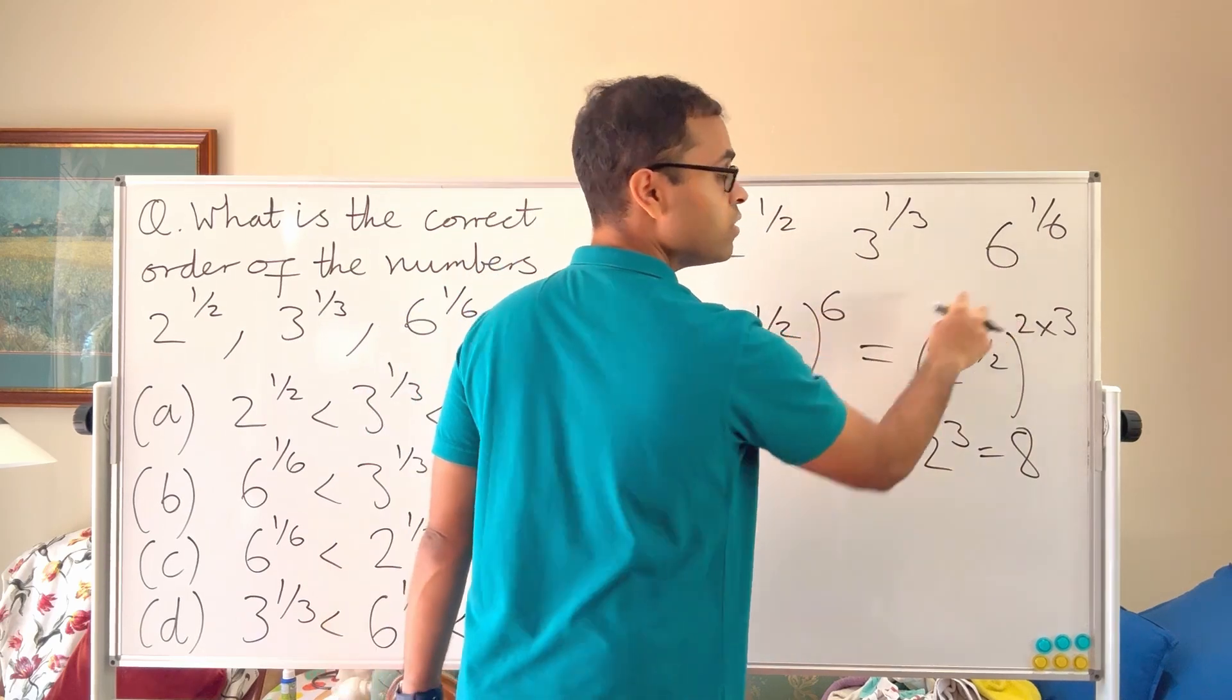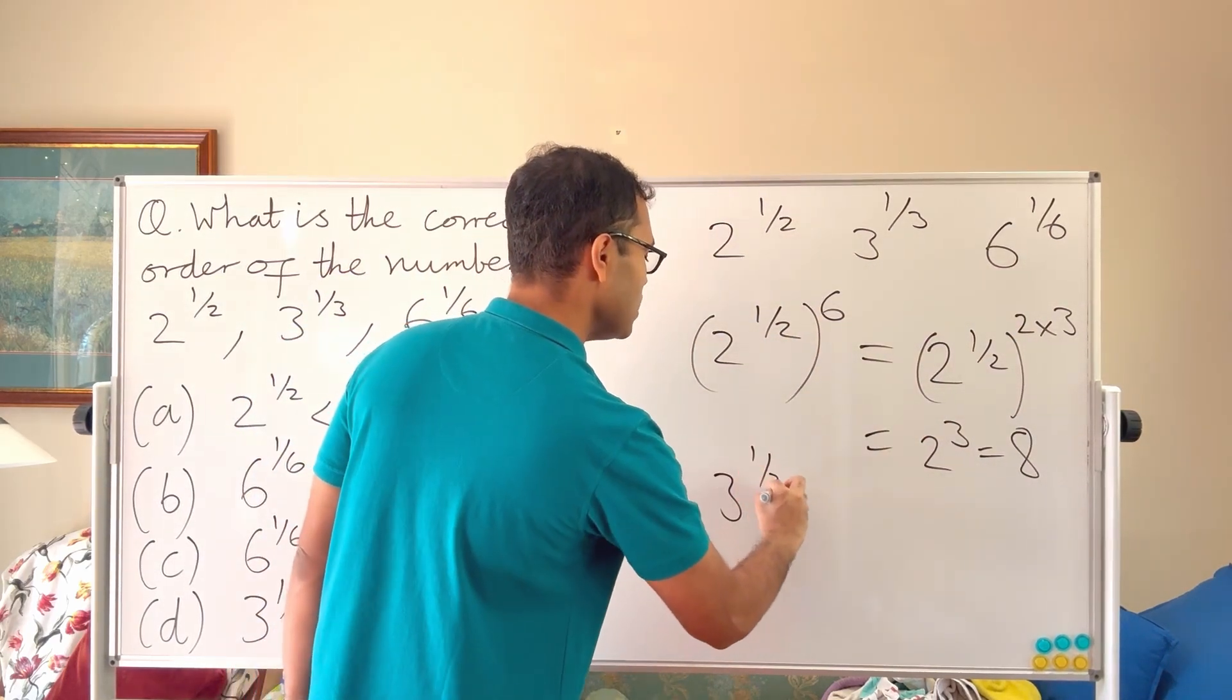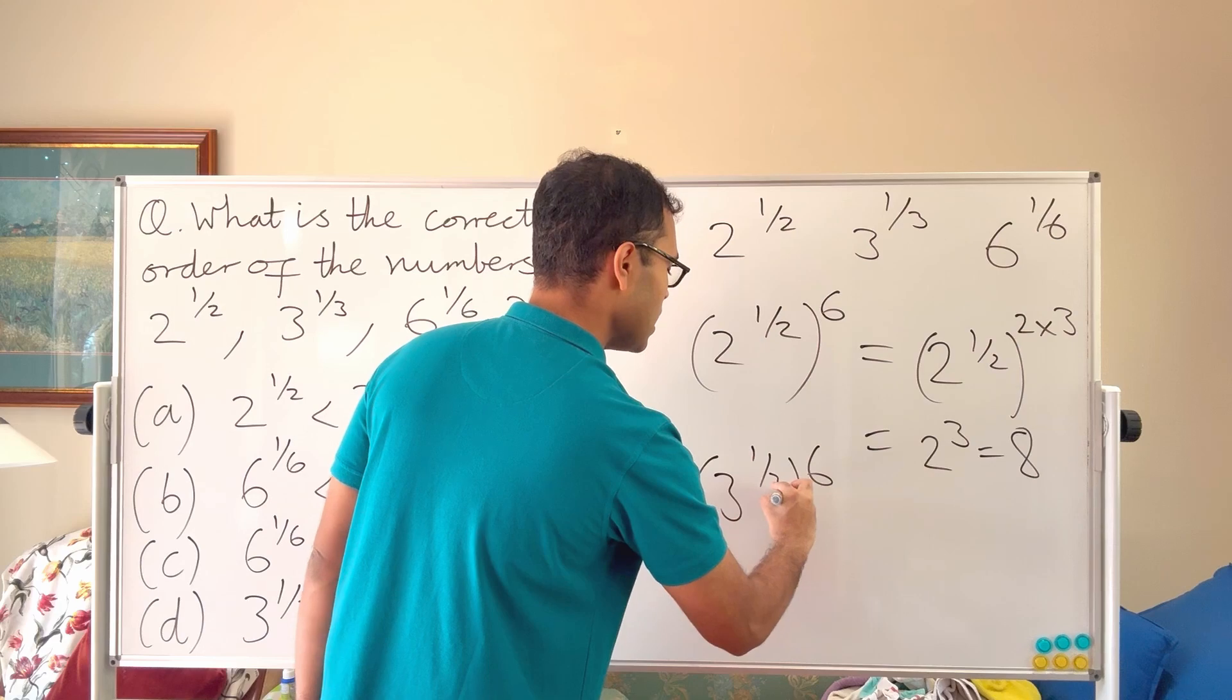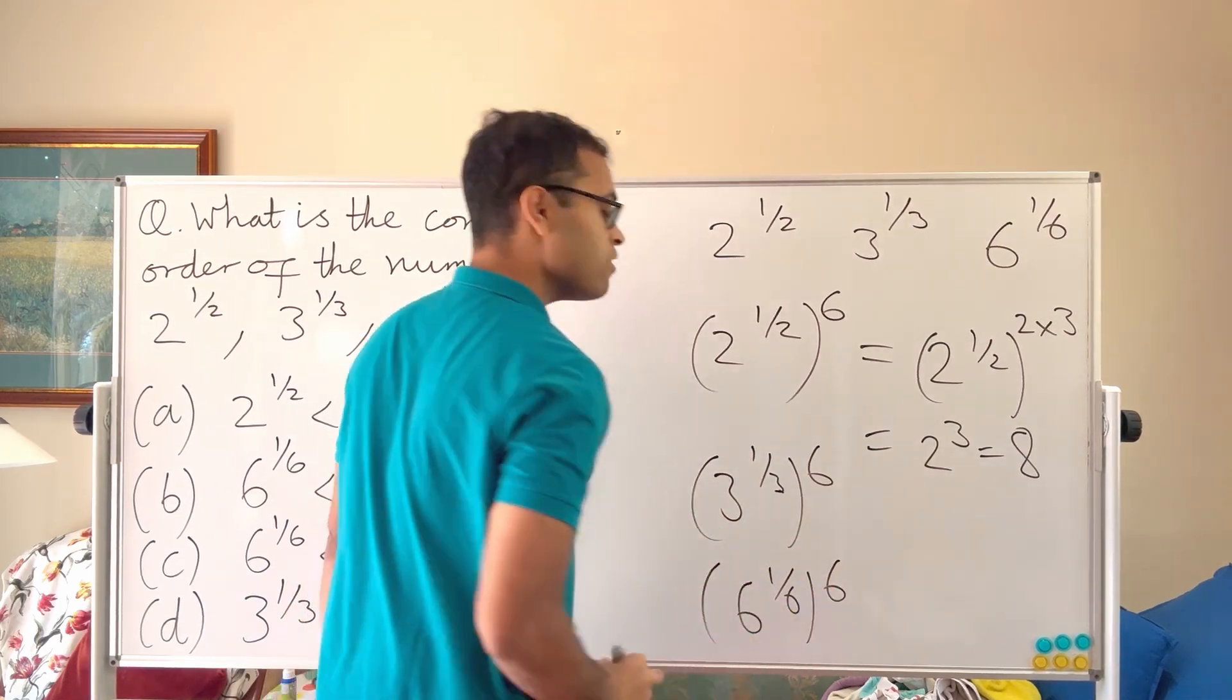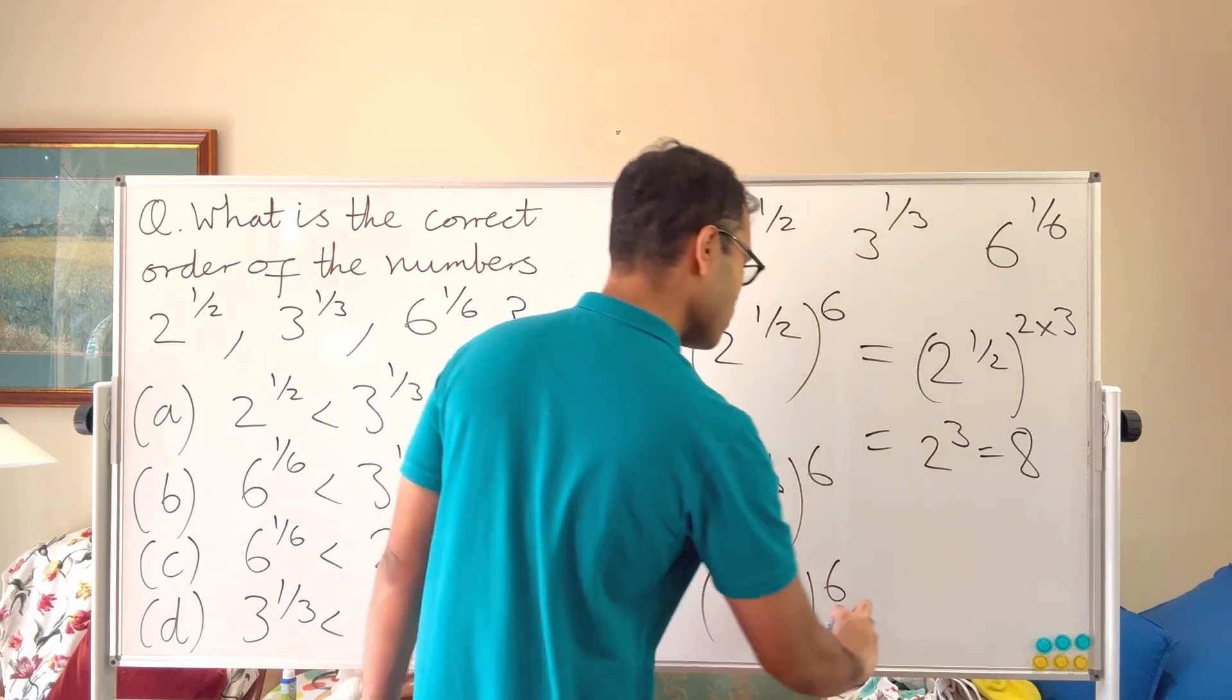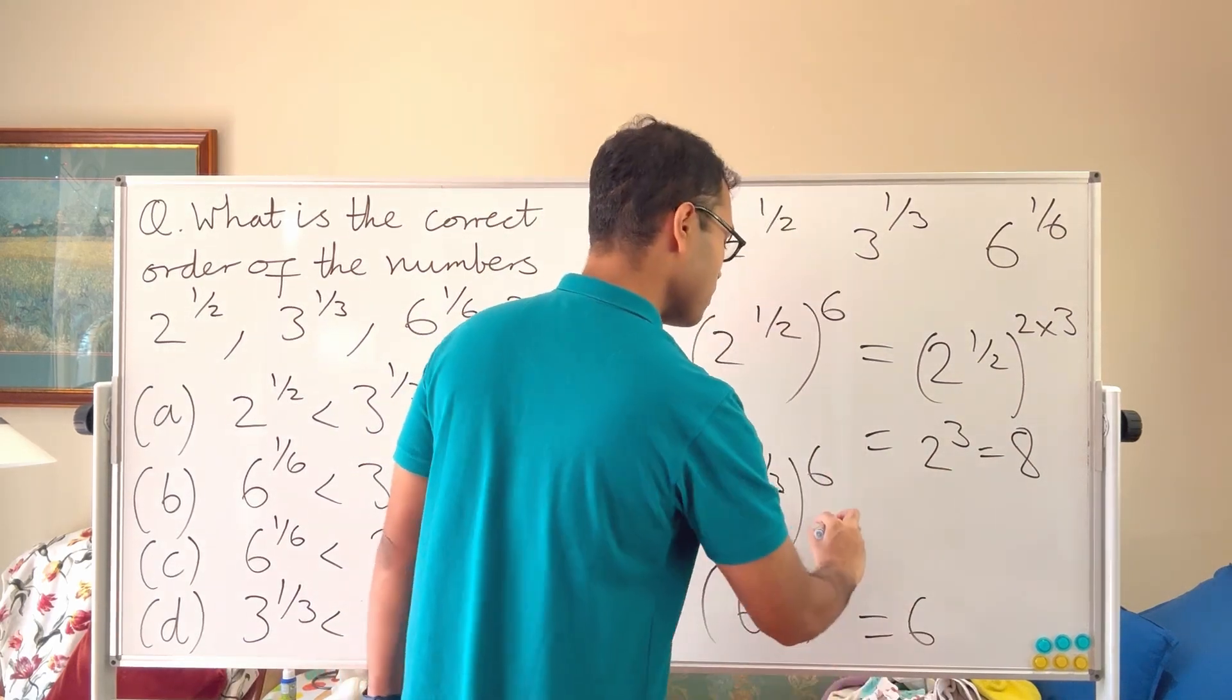Similarly we can do 3 power one over three and power that by 6, and similarly we can do 6 power one over six and power that by 6. And for the same reasoning, 6 power one over six power 6 is just 6.